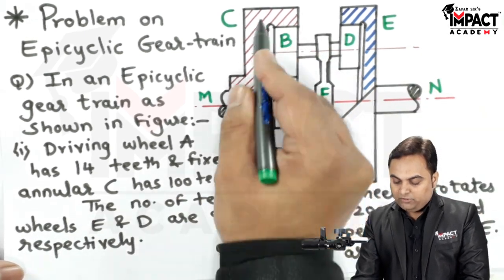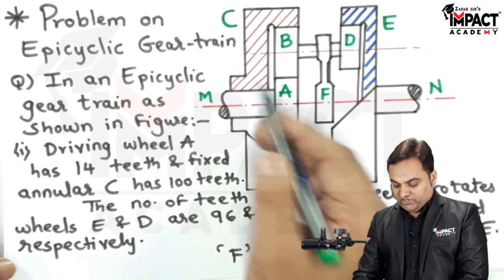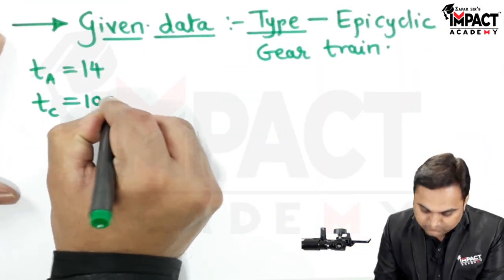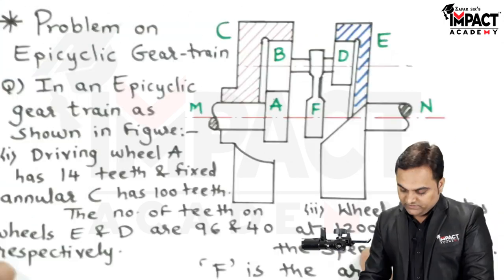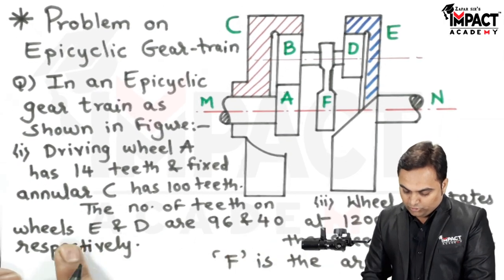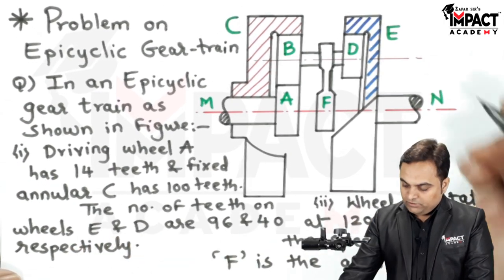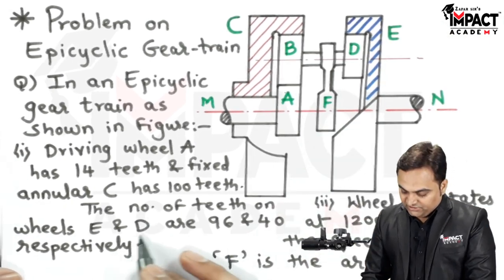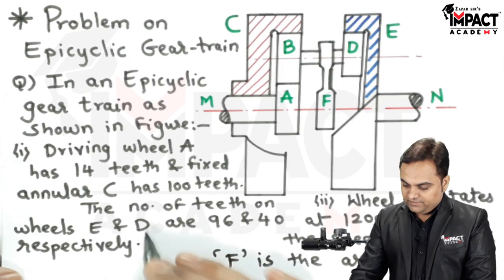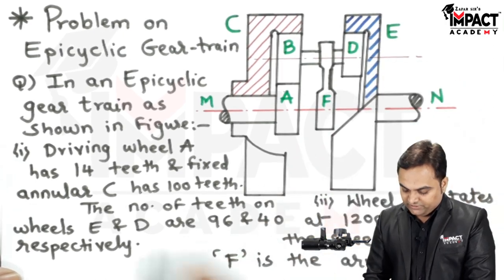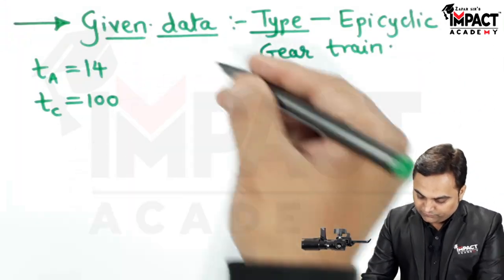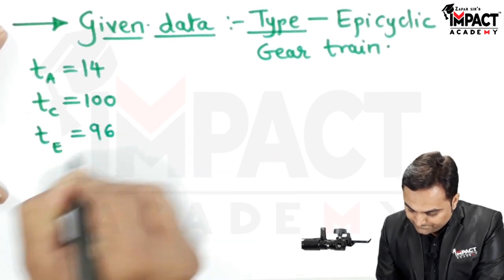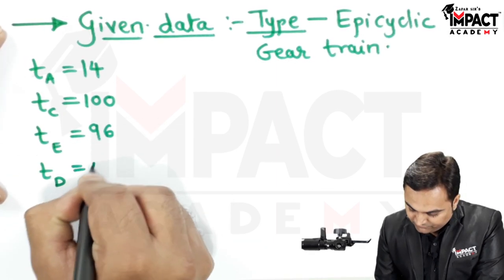Here is annular C, also called as the internal gear, having 100 teeth. The number of teeth on wheels E and D: E is also an annular having 96 teeth, and D is having 40 teeth respectively.